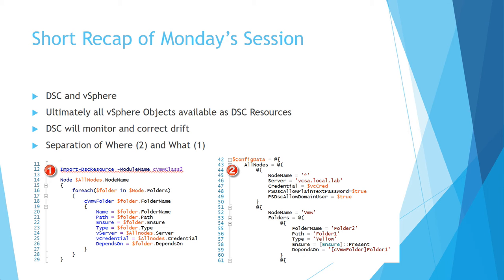An important thing we want to achieve with converting to DSC is the famous separation of where and what. I made two small screenshots at the bottom. The right one is where we actually do something — the folder name you're going to create and the location where you want to create it. This is the part you want to put under source control, where changes will be visible and you can diff with the previous situation. On the left is the what — the code that creates a folder using the data specified in the configuration file on the right.